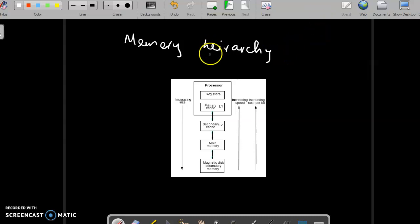Now we know that we have a register. We have a register, we have a cache, we have a main memory, and we have a magnetic disk.